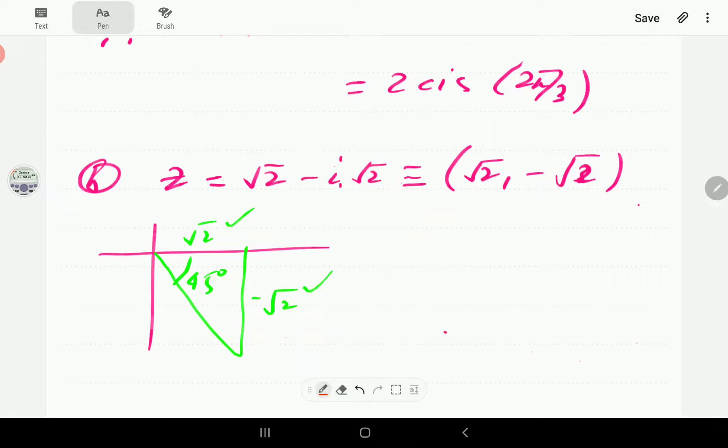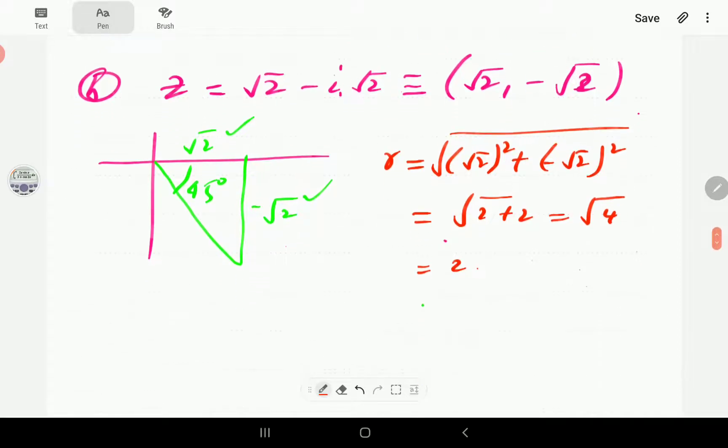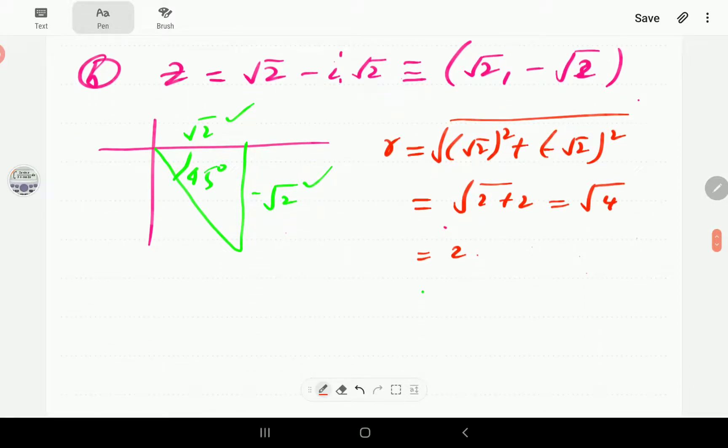So, let's work out the modulus. We're going to have square root 2 squared plus negative square root 2 squared. This is going to be 2 plus 2. Again, this is going to be square root 4. So, the modulus is going to be 2 again.